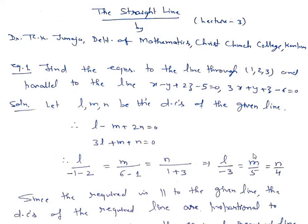Dear students, today we shall take a few more examples in the chapter on straight lines. First example: find the equations of the line through (1, 2, 3) and parallel to the line given by x minus y plus 2z minus 5 equals 0 and 3x plus y plus z minus 6 equals 0.